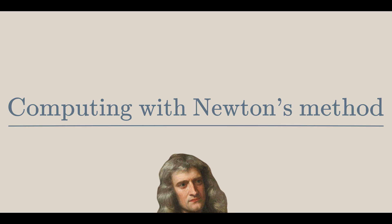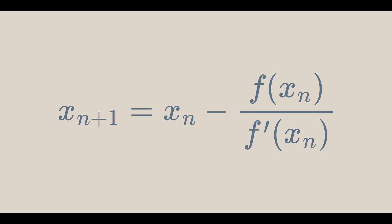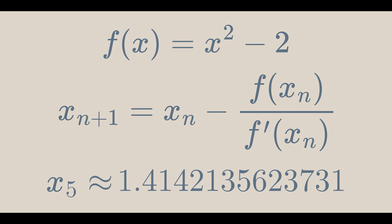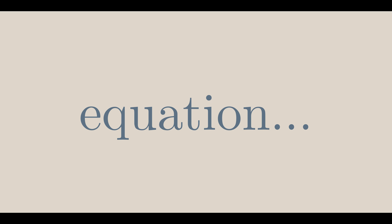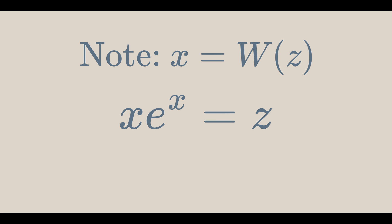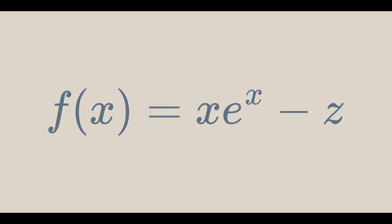But how do we compute such a function? Newton's method is a root-finding algorithm such that x sub n+1 equals x sub n minus f of x sub n over f prime of x sub n. As n grows to infinity, the approximation of a root of f of x gets better. Now, let's consider the equation x e to the x equals z. We know that x equals the Lambert W of z. Let's rearrange to get x e to the x minus z equals 0, so the root of the function f of x equals x e to the x minus z is the Lambert W of z.